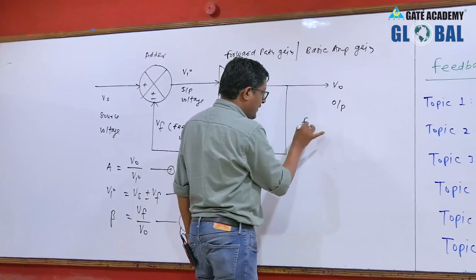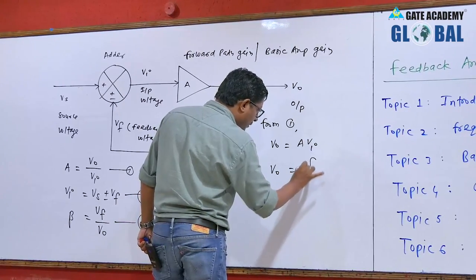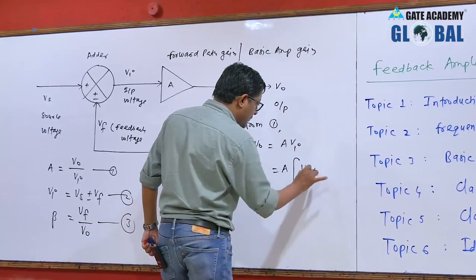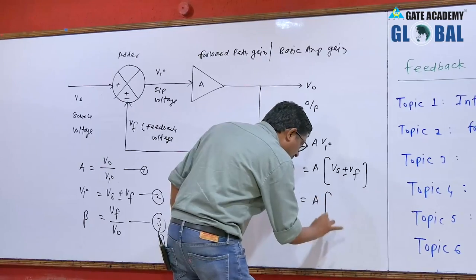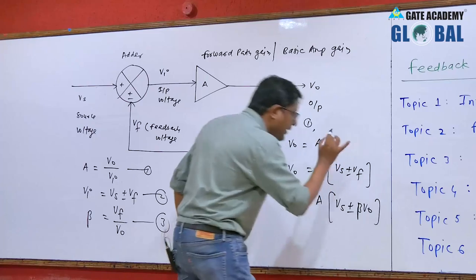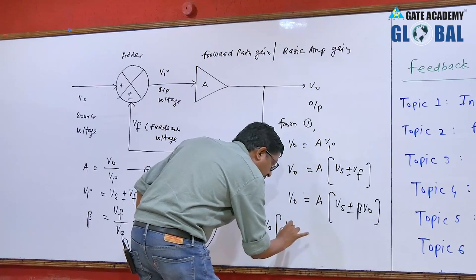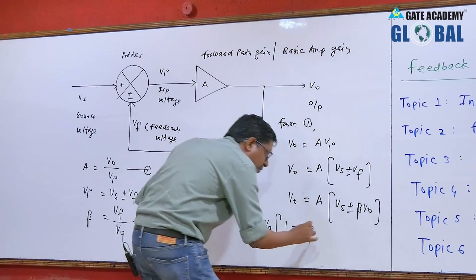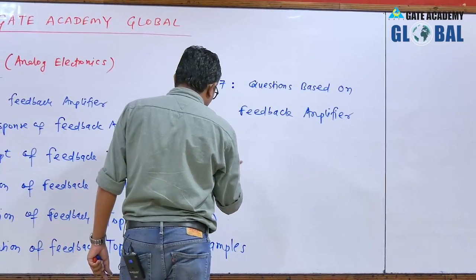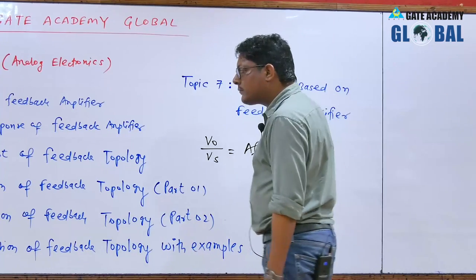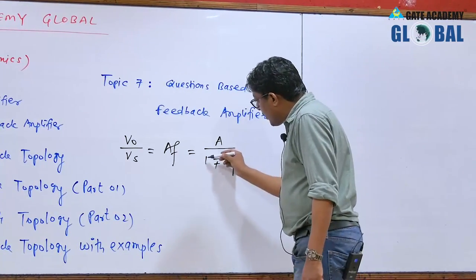From equation 1, V0 equals A times VI. From equation 2, VI equals Vs plus or minus Vf. From equation 3, Vf equals beta times V0. Combining these, we can calculate V0. The overall feedback gain — that means V0 divided by Vs — is given by A upon (1 minus/plus A·beta). This is the fundamental result of the feedback structure.